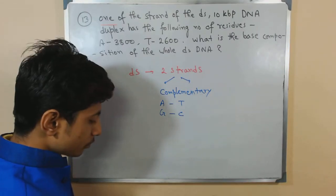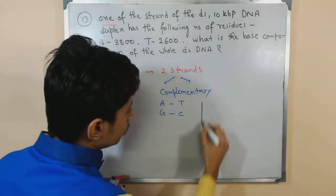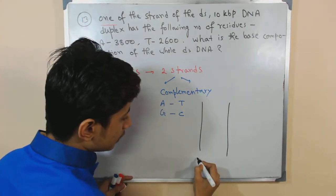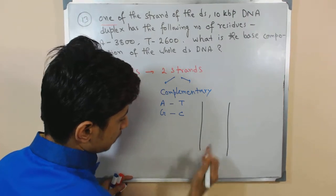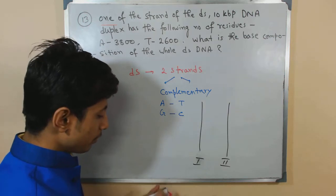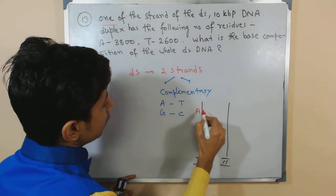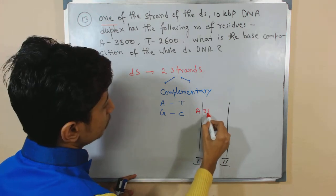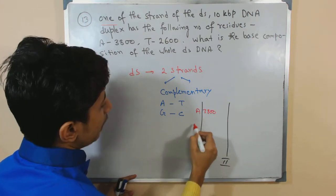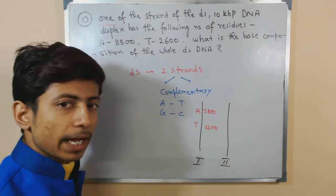In this case, let's draw the situation. We have strand 1 and strand 2, two different strands complementary to each other. In one strand, adenine is 3800 and thymine is 2600.